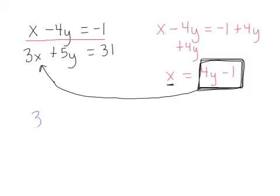So I've got 3 times, tell me what x is. 4y minus 1 plus what? 5y equals 31. Okay, now what's nice is my new equation now only has y's, and so I can just solve for what?